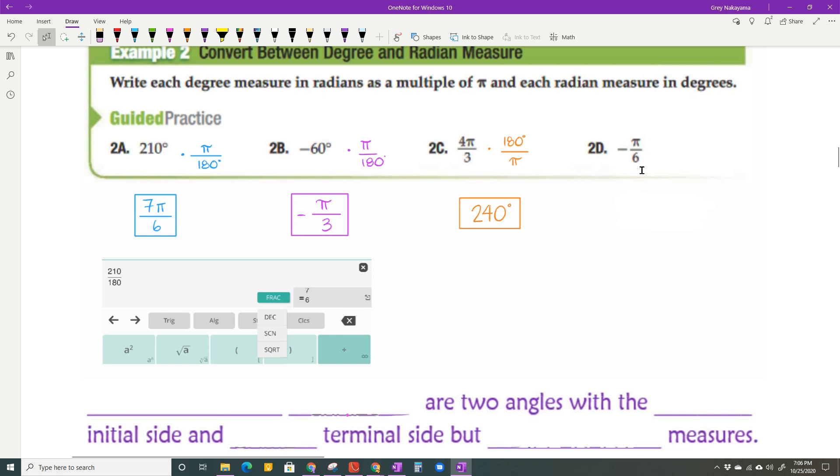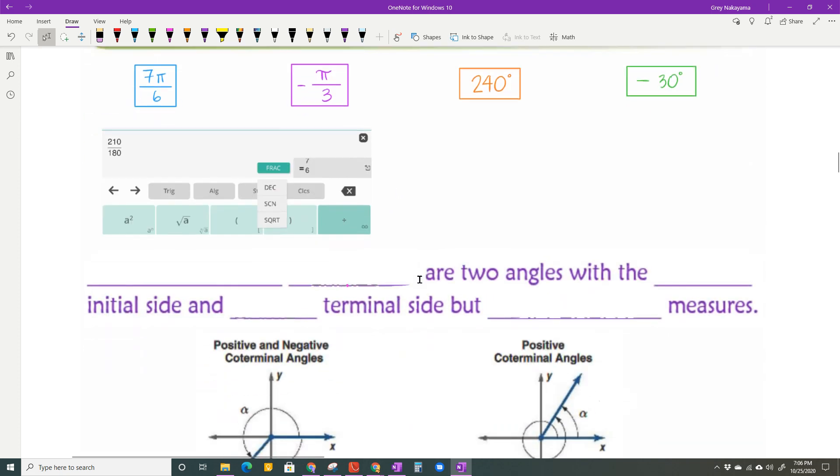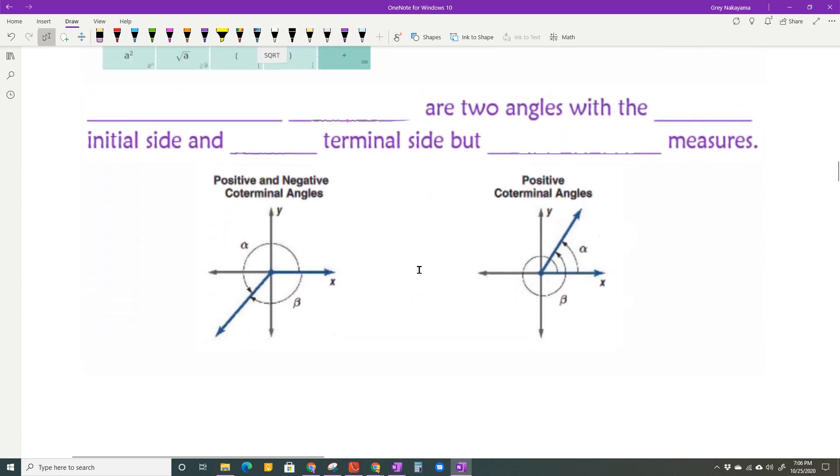All right, again, last one here, negative pi over 6. I have radians. I'm going 2 degrees, so I'm going to have degrees on top, radians on the bottom. My pi's cancel out and 180 over 6 is going to be negative 30 degrees. So if you want any help with class calc, please don't hesitate. Let me know.